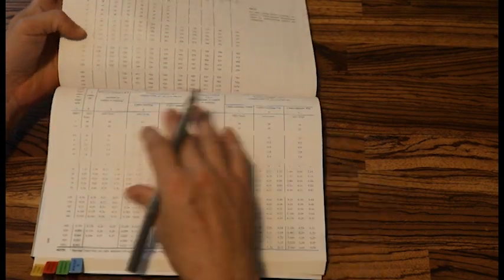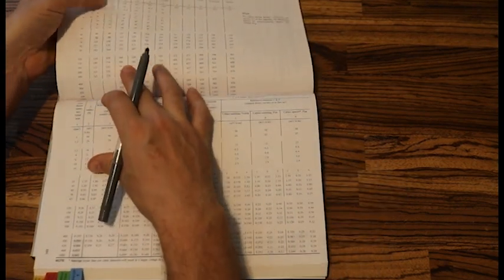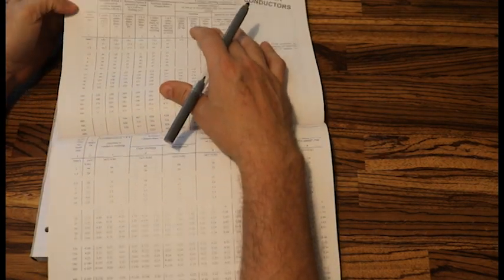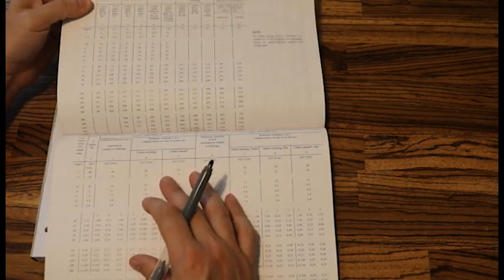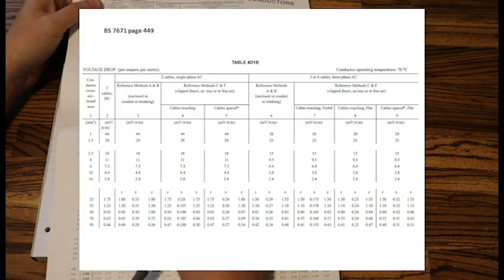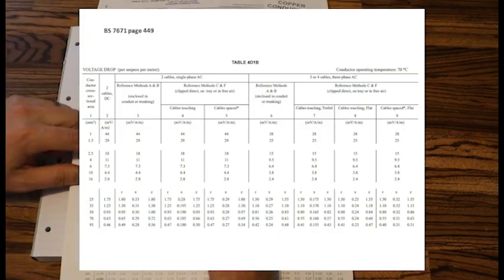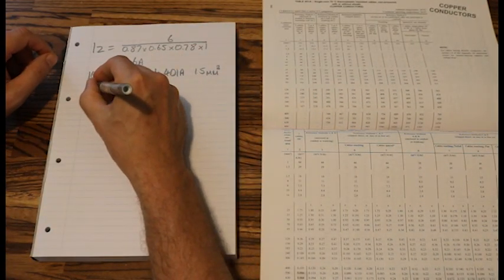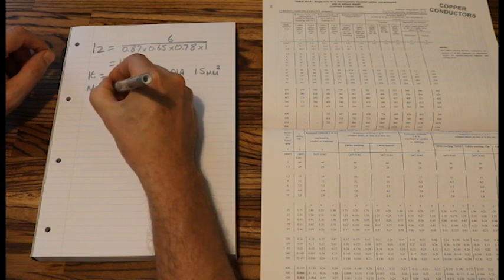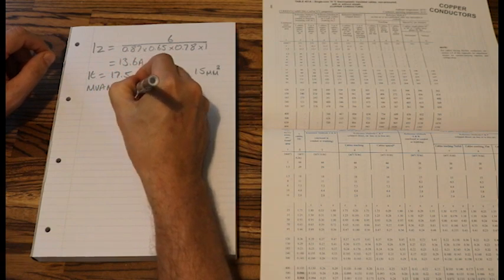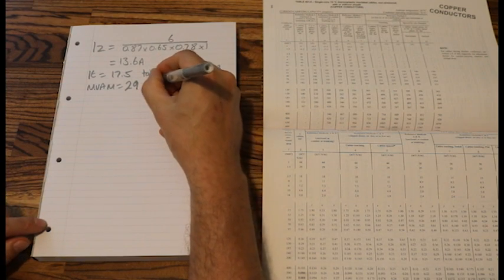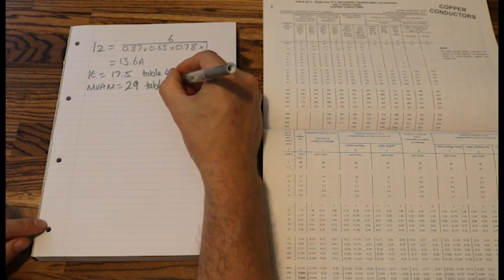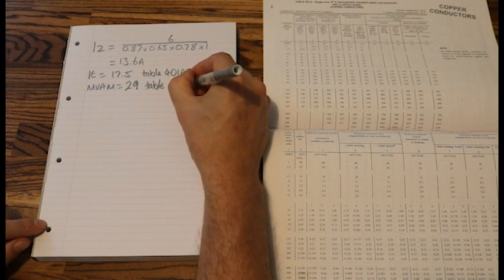And we go back, we now need the NVAM value. So these tables come as a pair, this is our IT table, here is our NVAM value. We are reference method B, enclosed in trunking, so we can look at this one, column 3 says 1.5 mil cable, NVAM value is 29. So we can now write NVAM equals 29, reference to table 4D1B.